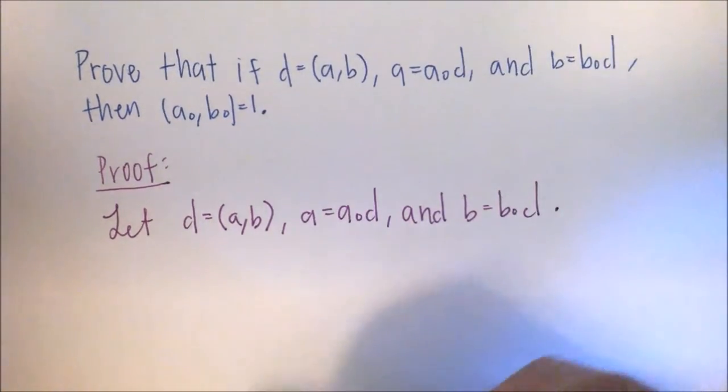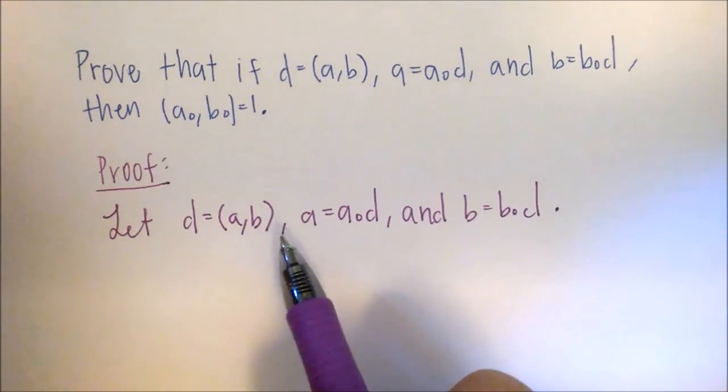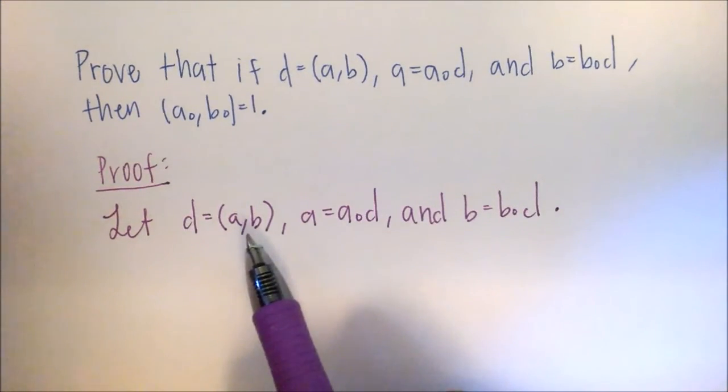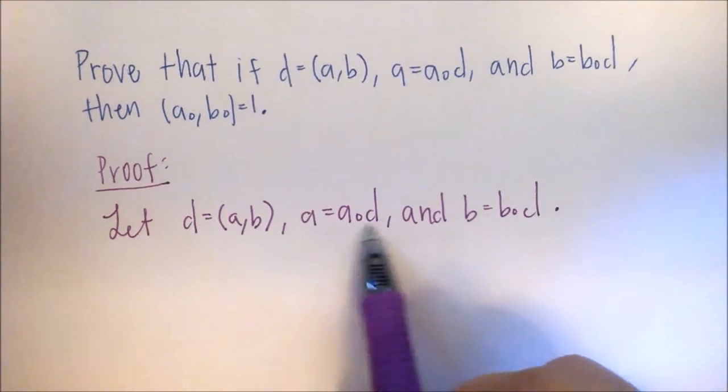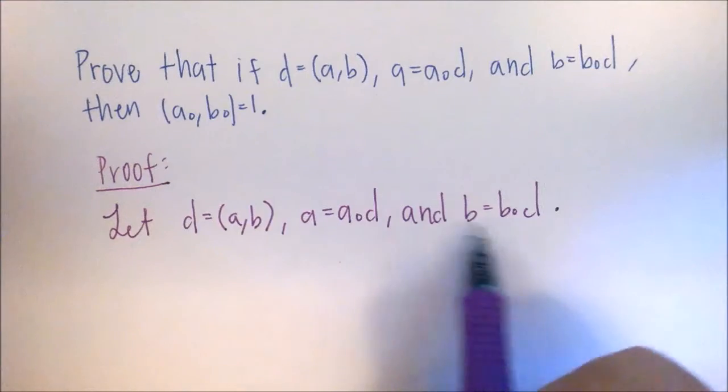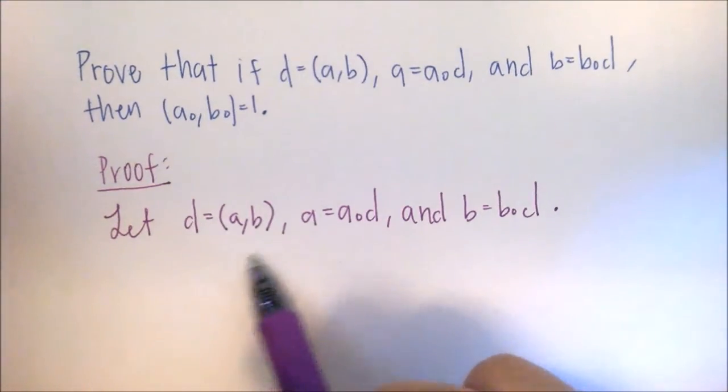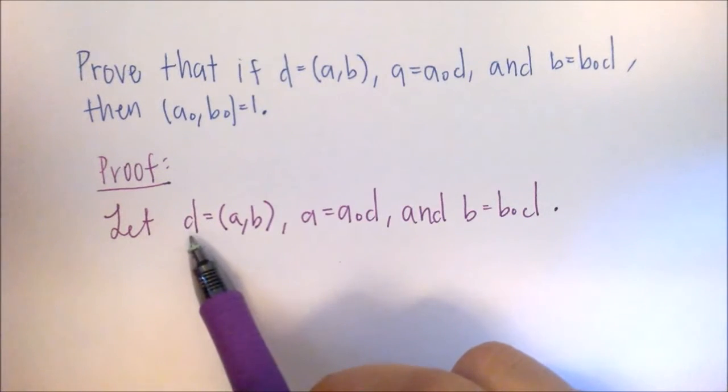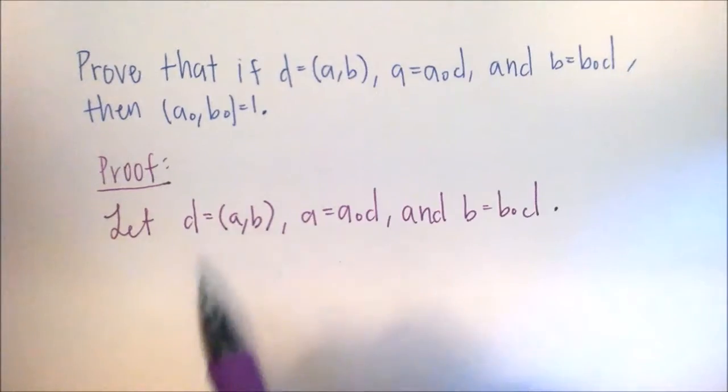So then the next step is just taking your assumptions and seeing if we can write them differently or use them in a way that will take us to the next step of the proof. Well, we can't really do anything with A equals and B equals this, but we do know that we can write this in another form because saying that D is equal to the GCD of A and B is really just saying that D is equal to a linear combination of A and B.